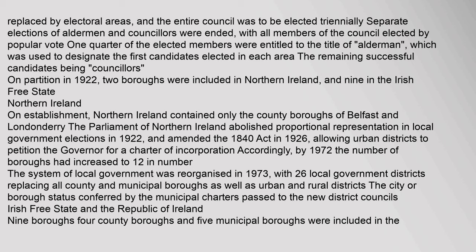Northern Ireland contained only the county boroughs of Belfast and Londonderry on establishment. The Parliament of Northern Ireland abolished proportional representation in local government elections in 1922, and amended the 1840 Act in 1926, allowing urban districts to petition the governor for a charter of incorporation. By 1972 the number of boroughs had increased to 12. The system of local government was reorganised in 1973, with 26 local government districts replacing all county and municipal boroughs as well as urban and rural districts. The city or borough status conferred by the municipal charters passed to the new district councils.